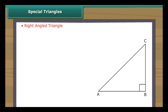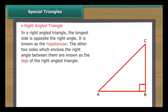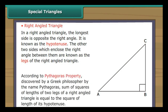In a right-angled triangle, the longest side is opposite the right angle and is known as the hypotenuse. The two sides that enclose the right angle are known as the legs. According to the Pythagoras property, discovered by Greek philosopher Pythagoras, the sum of the squares of the lengths of the two legs equals the square of the length of the hypotenuse.